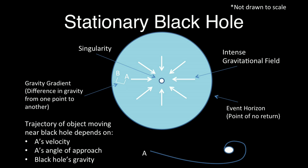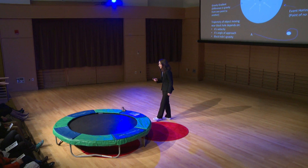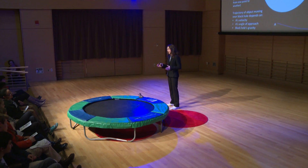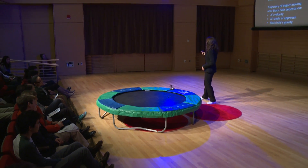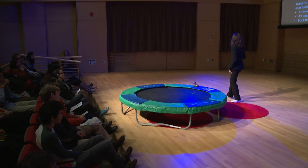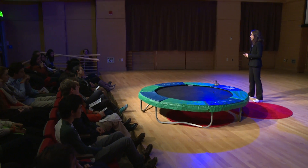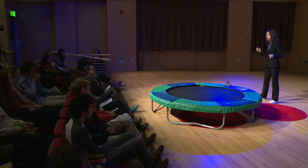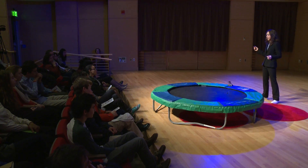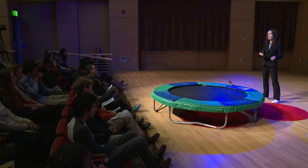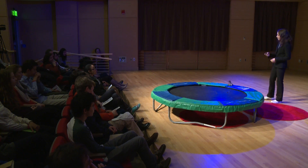Now we have the gravity gradient, which is the rate of change of gravitational force over a distance, and also the trajectory of an object — basically the curve that object A would follow as a result of A's initial angle and velocity at which it approaches object B, or in this case the black hole. What would happen if one were to get too close to a black hole by some means? Well, I will tell you.